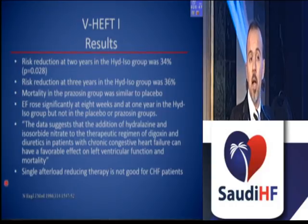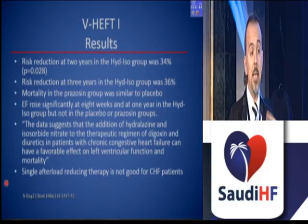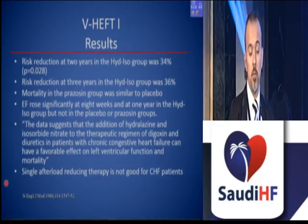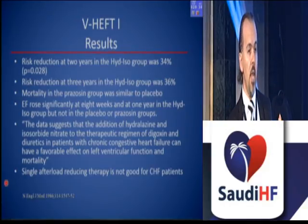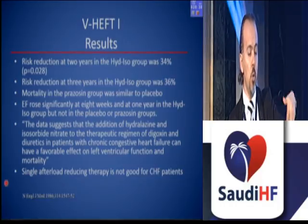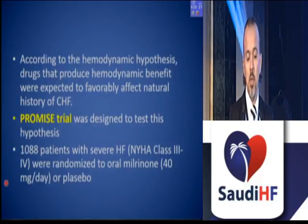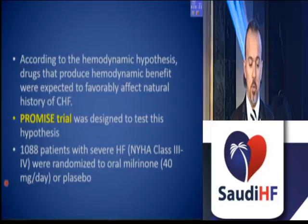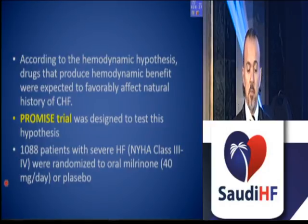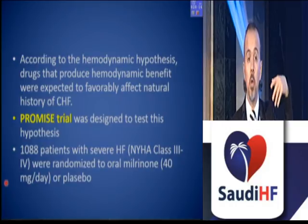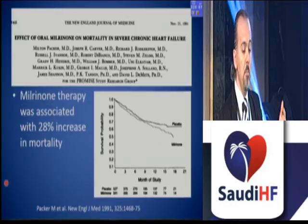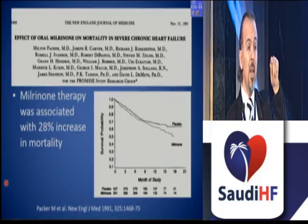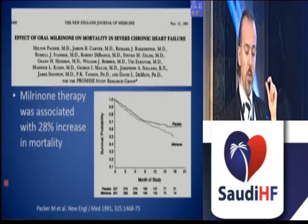Risk reduction was seen in the hydralazine-isosorbide dinitrate group. However, physicians concluded that single afterload-reducing therapy was not good for chronic heart failure patients, because a single afterload-reducing agent cannot fight against neurohormonal axis activation. The PROMISE trial was designed to test the hemodynamic hypothesis, including more than 1,000 severe heart failure patients randomized to milrinone — a PDE-5 inhibitor, an inotropic drug — and placebo. Milrinone therapy was shown to be associated with a 28% increase in mortality, contrary to common belief at that time.